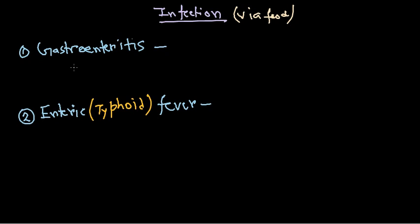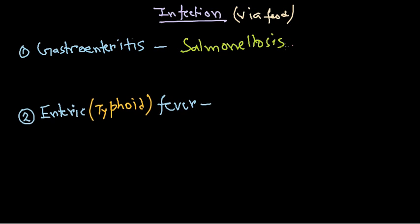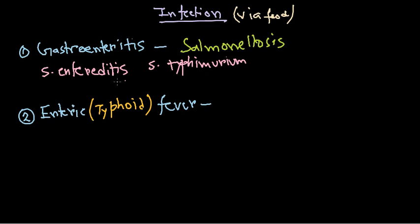The first type, gastroenteritis, is a localized disease also called Salmonellosis. This is caused by the serotype Salmonella Enteritidis, and can also be caused by Salmonella Typhimurium. These are serotypes of Salmonella enterica.